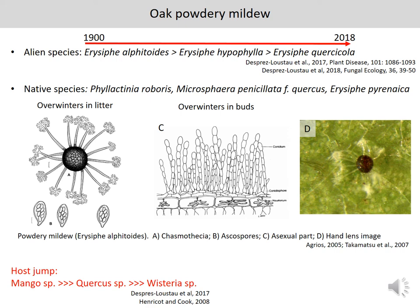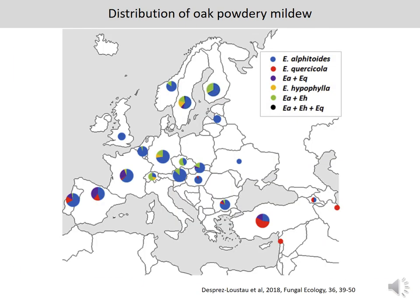What we know is that it most probably came from a mango-associated species from Asia, and the most susceptible oak species to this pathogen mildew infection is Quercus robur. The most widespread species is Erysiphe alphitoides, but it often co-occurs with two other mildew species.